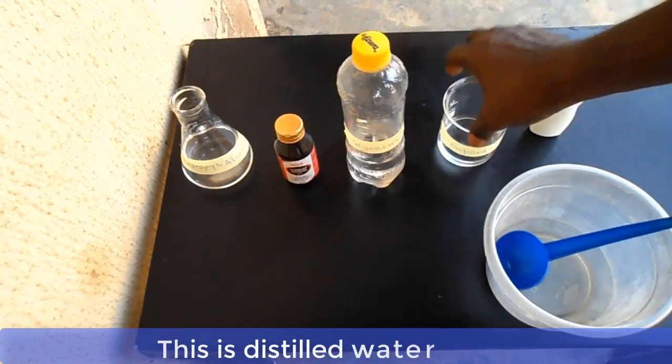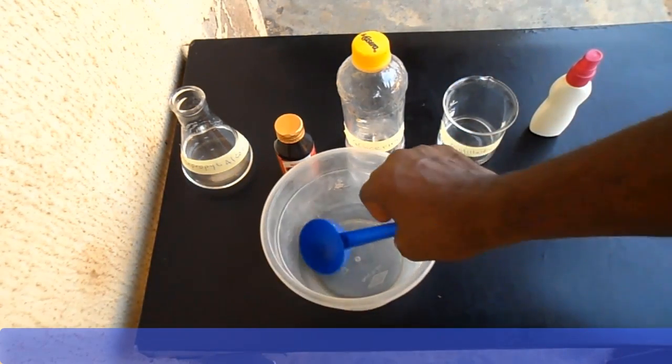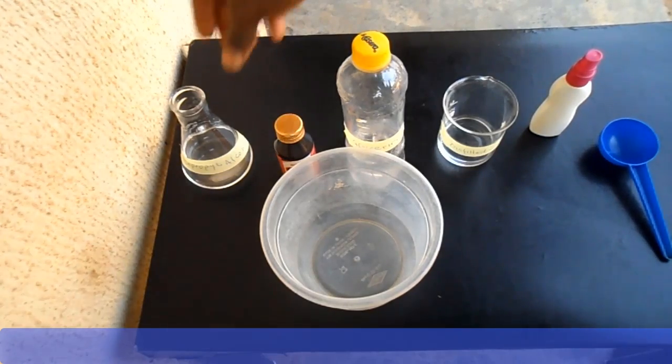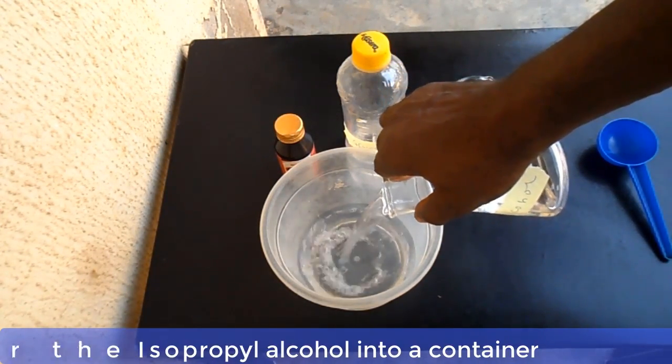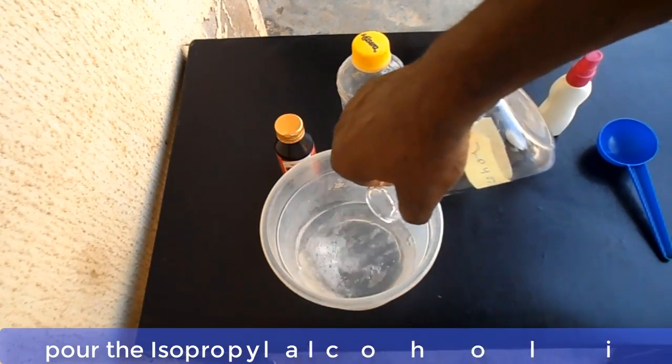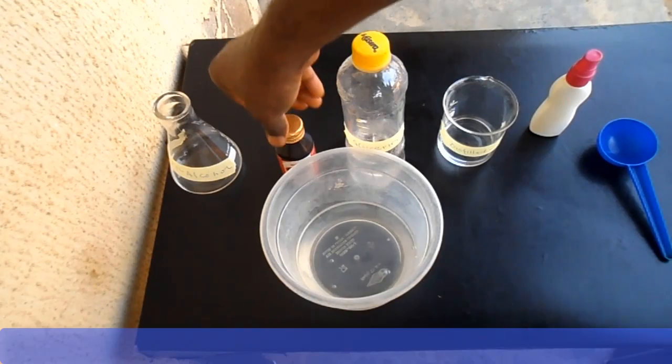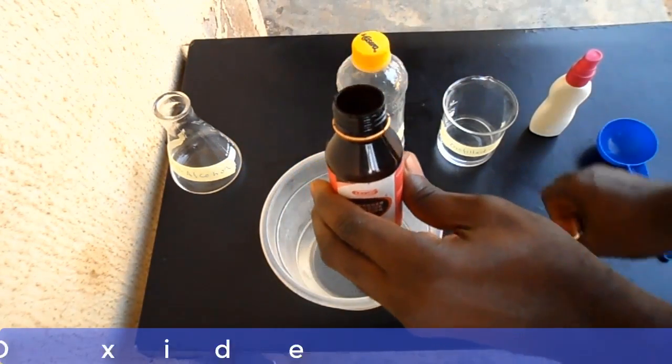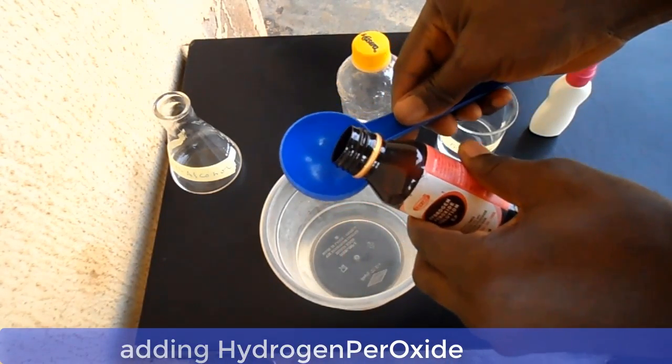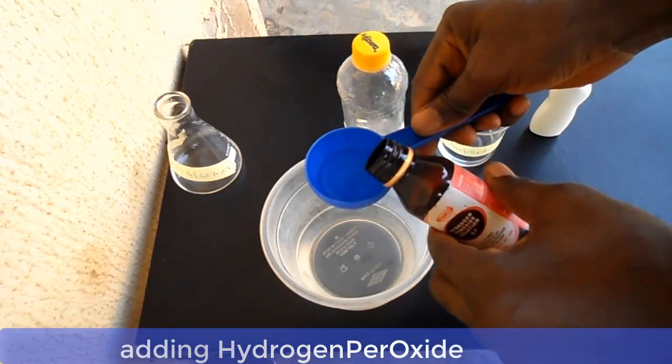Now pour your isopropyl alcohol into a container and add a tablespoon of hydrogen peroxide to it. Hydrogen peroxide can be obtained from the pharmacy stores.